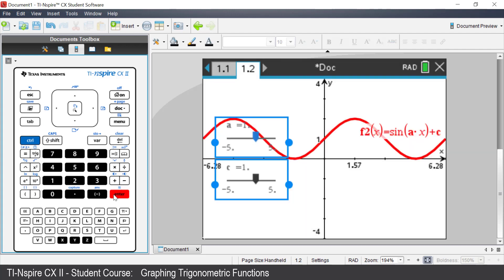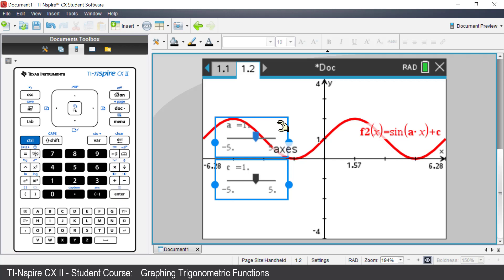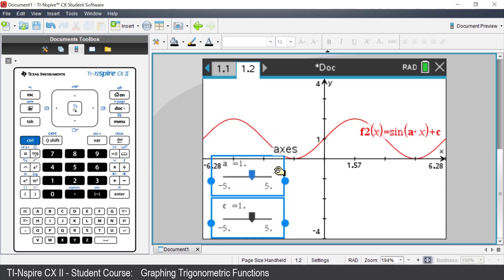The sliders are placed on your screen. On the calculator you can move the sliders by moving your cursor to the slider area and pressing the middle of the touchpad for 2 seconds to close the hand. Move the sliders to where you want them. Press the middle of the touchpad to release.